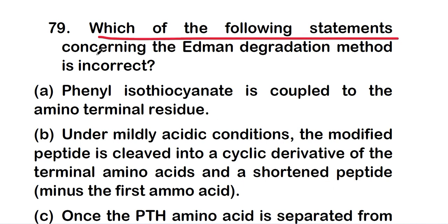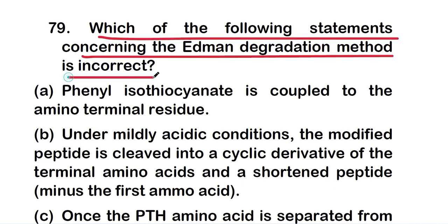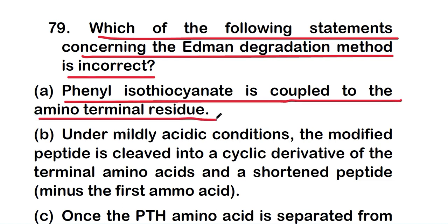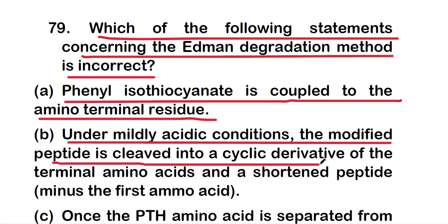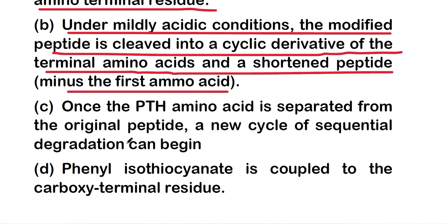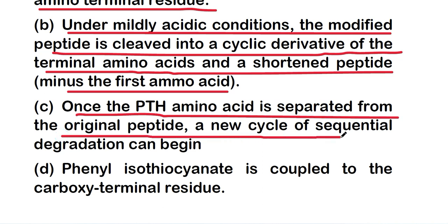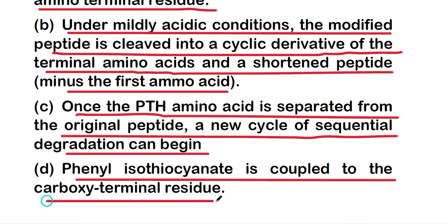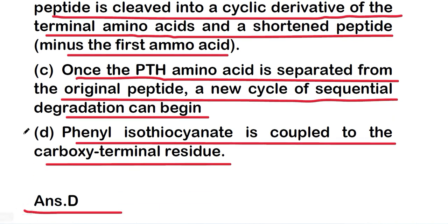Next question: which of the following statements concerning the Edman degradation method is incorrect? Option A, phenyl isothiocyanate is coupled to the amino-terminal residue; option B, under mildly acidic conditions the modified peptide is clipped into a cyclic derivative of the terminal amino acid and a shortened peptide minus the first amino acid; option C, once the PTH amino acid is separated from the original peptide a new cycle of sequential degradation can begin; or option D, phenyl isothiocyanate is coupled to the carboxy-terminal residue. The right answer is option D — this is the incorrect statement, as phenyl isothiocyanate couples to the amino-terminal, not carboxy-terminal, residue.